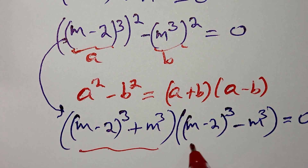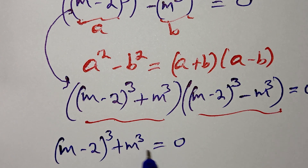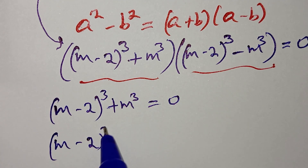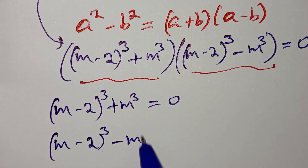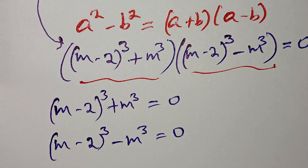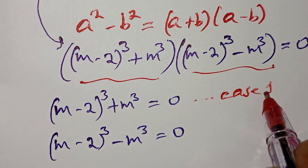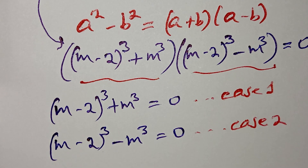There are two cases. Case 1: (m minus 2) to the power of 3 plus m to the power of 3 is equal to 0. Case 2: (m minus 2) to the power of 3 minus m cubed is equal to 0.